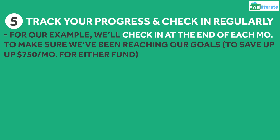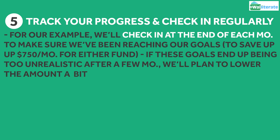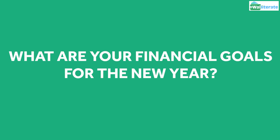So with our example, we'll want to check in at the end of each month to make sure we're reaching our goal of putting away $750 a month by lowering our monthly expenses and earning more income every month. And if it's proving to be too unrealistic after a few months, we may want to lower the amount a bit. Let me know in the comments: what are your financial goals for the new year?